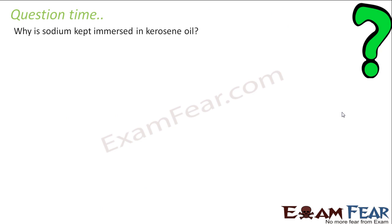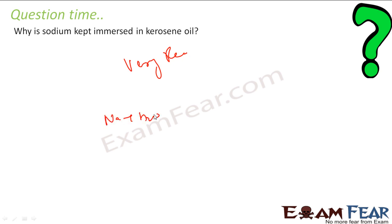The first question is: why is sodium immersed in kerosene? Because sodium is very reactive — it will react with moisture in the air and become NaOH. That is why sodium is kept in kerosene oil, so that it does not come in contact with water or moisture.